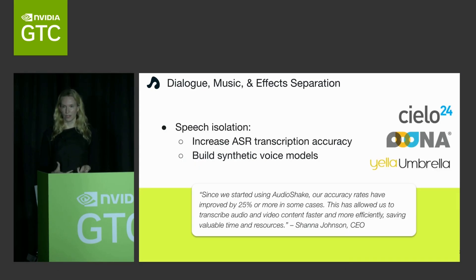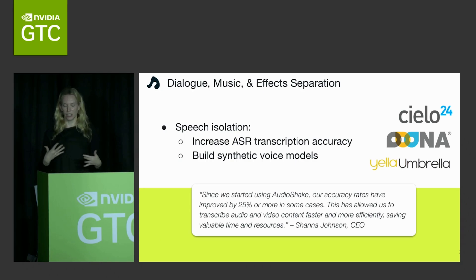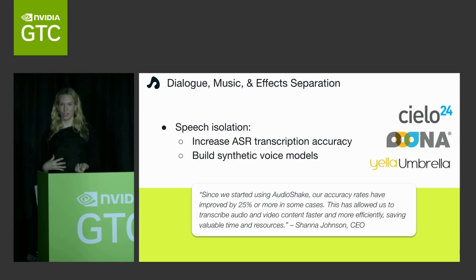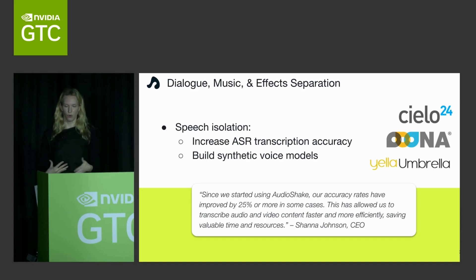Another use for dialogue, music, and effects separation is speech separation. Passing speech through Audioshake before ASR transcription boosts accuracy. ASR generally works really well in clean environments like this one, but if you add music to the background or many people talking at once, transcription accuracy typically plummets — it's just too much noise. Audioshake cleans that speech before it goes through transcription. A lot of our customers in this area have reported increases of anywhere from 25% to 40% in accuracy. It can also be used to train synthetic voice models.